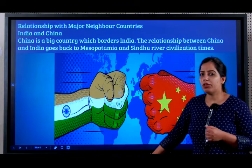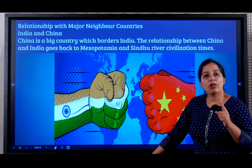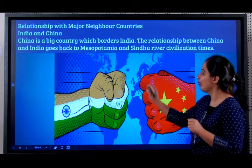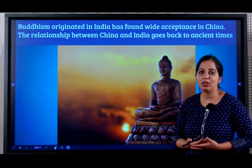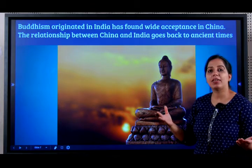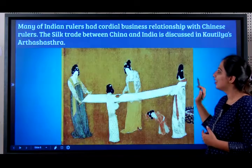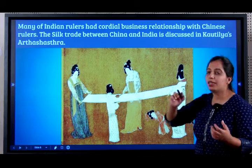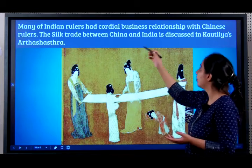As I was teaching you in the first chapter of geography about the frontiers or borders of India, China is a northern border. Buddhism originated in India — Lord Buddha enlightened and founded the religion of Buddhism in India, and it is widely practiced and accepted in China. So the relationship between India and China goes back to ancient times, and many Indian rulers had significant business relationships with Chinese rulers. There was also a silk trade between China and India.